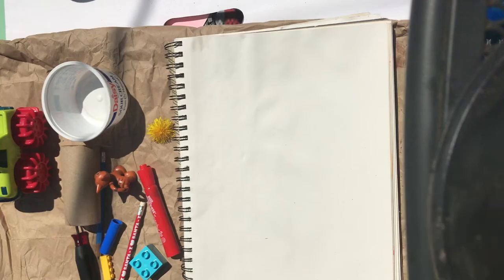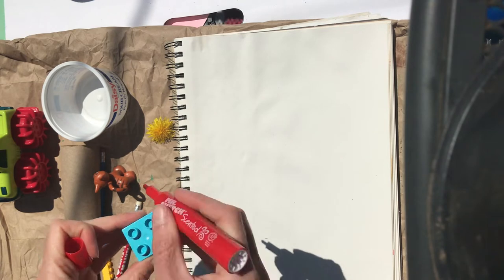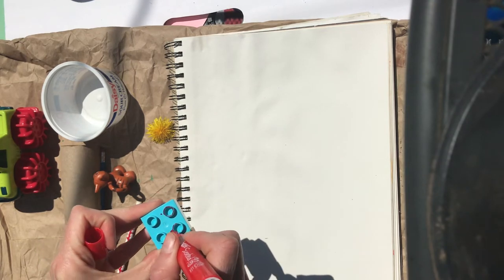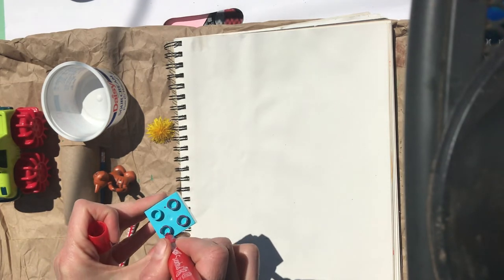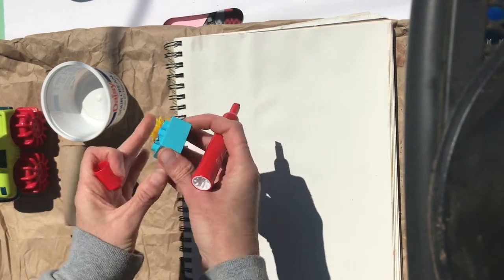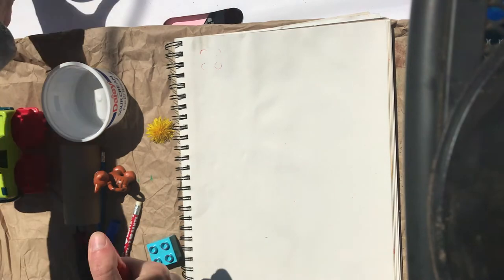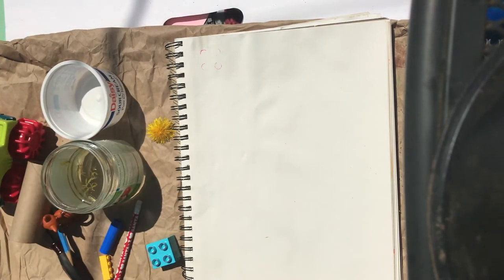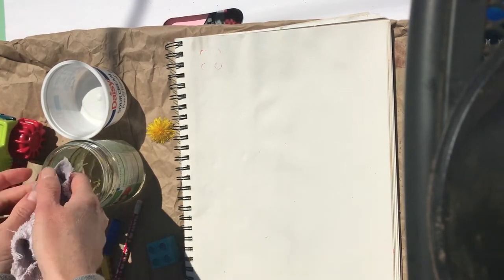The first thing we're going to go over is how to use your markers to do the printmaking. So you want to color on the surface that you're going to use to make your print, which is going to be the higher part of the surface, and then press it on your paper. If it doesn't show up very well, you'll want to get your paper a little bit damp.